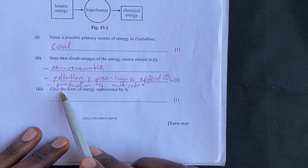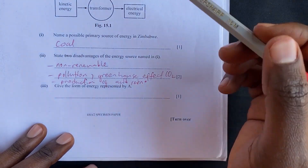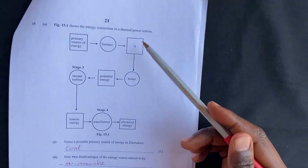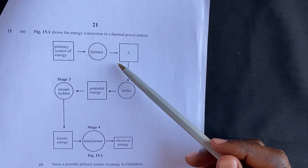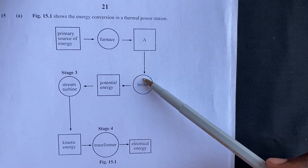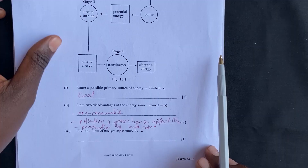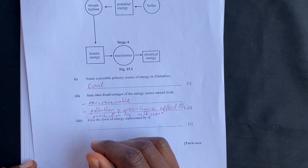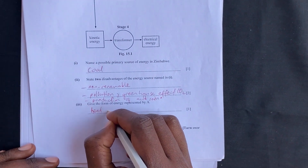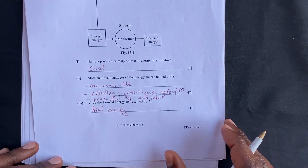Item 3: Give the form of energy represented by A, which runs from the furnace to the boiler. The form of energy represented by A is heat energy.